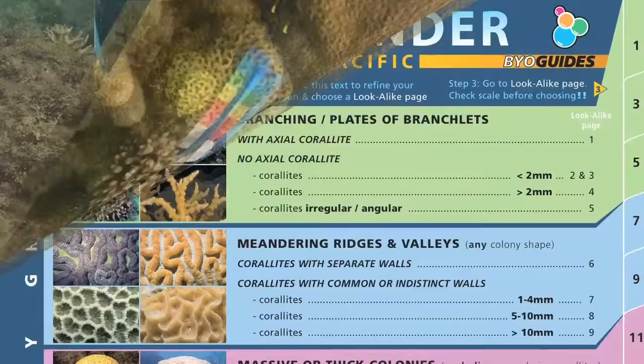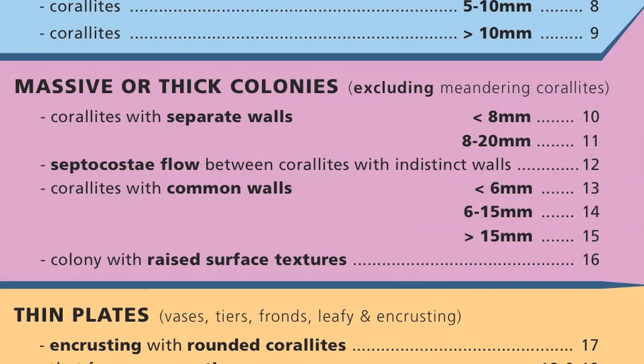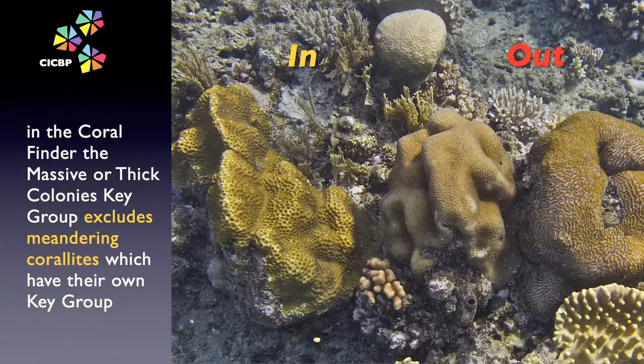Now inspect the massive or thick colony key group on the front page of your coral finder. Note how it specifically excludes corals with meandering coralites, which have their own key group. So by this reasoning, of the four corals shown here, we would pursue two using the massive key group, and the other two using the meandering key group.